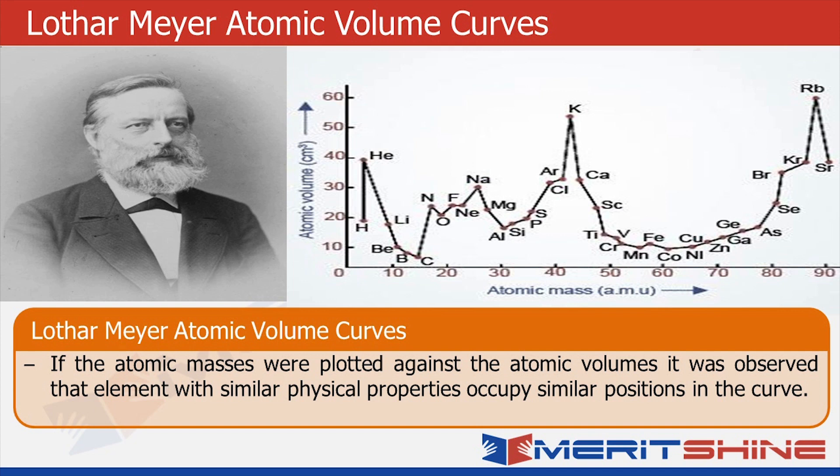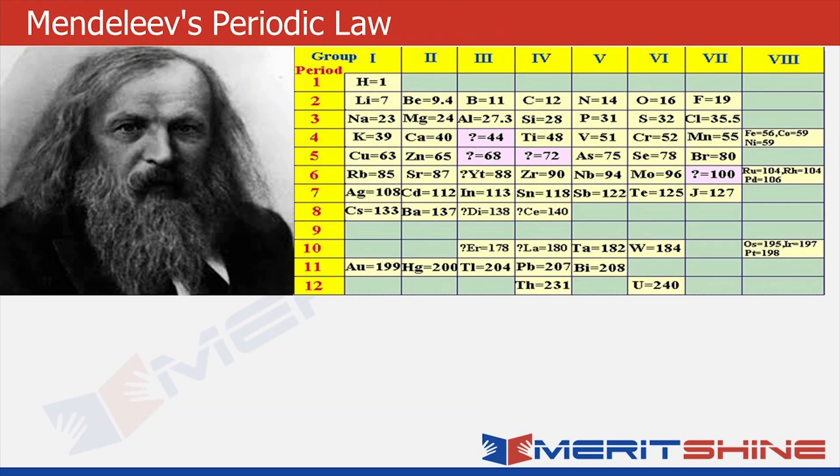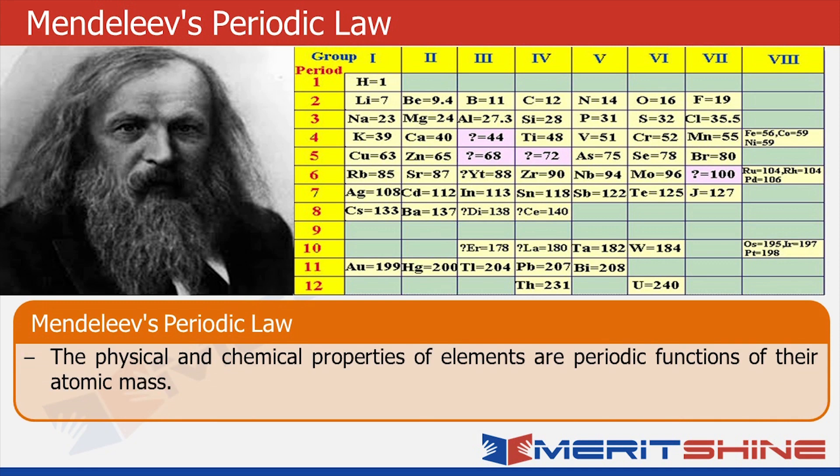Well, this model also had its limitations. And then came the most famous Mendeleev's periodic law. He stated the physical and chemical properties of the elements are periodic function of their atomic mass. Mendeleev arranged all the elements known at that time in increasing order of atomic mass. And this arrangement became periodic table.